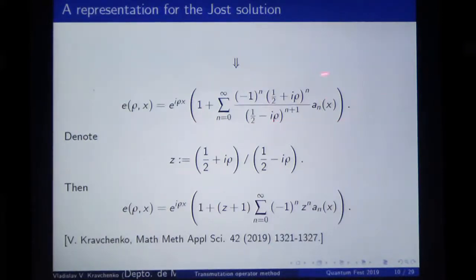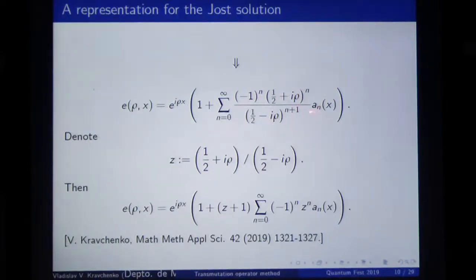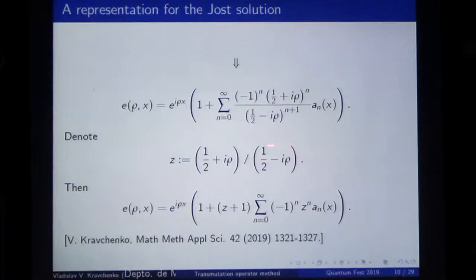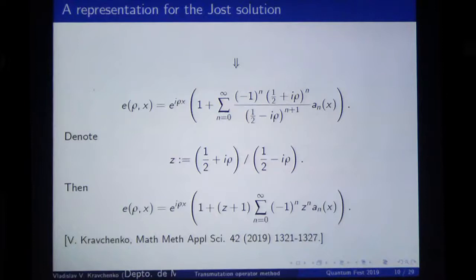What we obtain is that the Jost solution admits such a representation. It is quite trivial that a new notation should be introduced here: this new parameter Z, defined in this way. In terms of Z, the Jost solution simply takes this form — it is simply a power series in terms of the parameter Z.